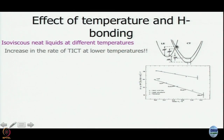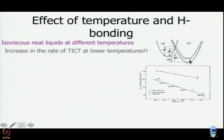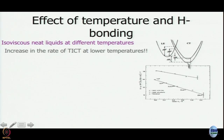Here is the energy surface for the locally excited state, and this is the energy surface for the charge transfer state. The charge transfer state is going to be stabilized further if polarity is more. There are two CT surfaces here — the upper one and the lower one — corresponding to two temperatures. The lower one corresponds to the lower temperature.